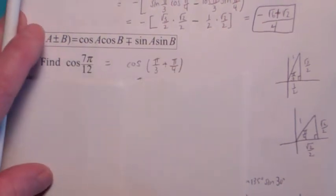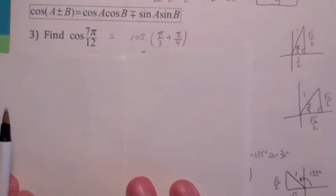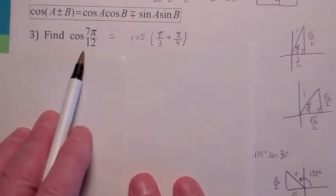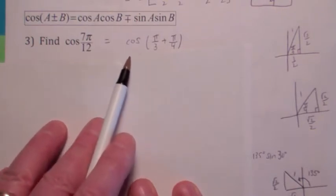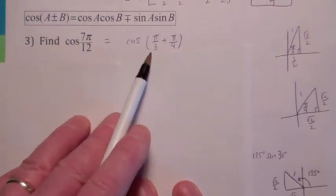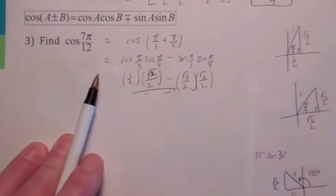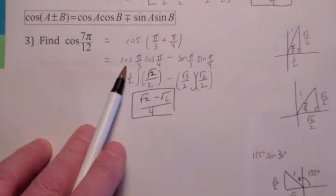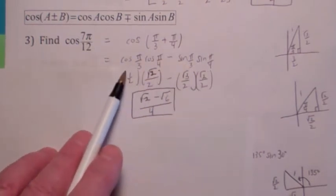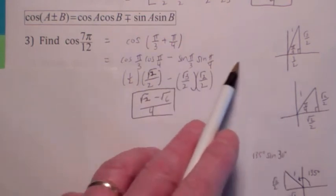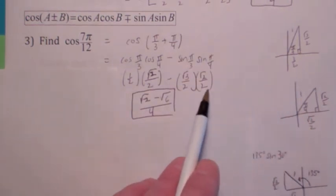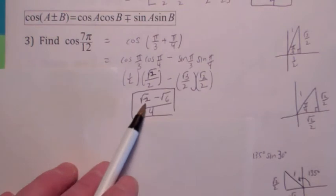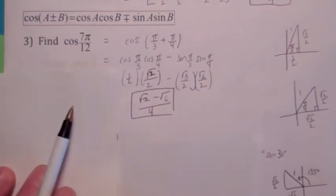How about finding the cosine of 7π over 12? First, is it going to be a positive or negative number? Think about the cosine of 7π over 12 — what quadrant are you in? You're in quadrant two, so this should be a negative number. You can write 7π over 12 as π over 3 plus π over 4. Using the formula: cosine of the first, cosine of the second, minus sine of the first, sine of the second. Cosine π over 3 is 1 half, cosine π over 4 is radical 2 over 2, sine π over 3 is radical 3 over 2, sine π over 4 is radical 2 over 2. You end up with radical 2 minus radical 6 over 4 — sure enough, that's a negative number.